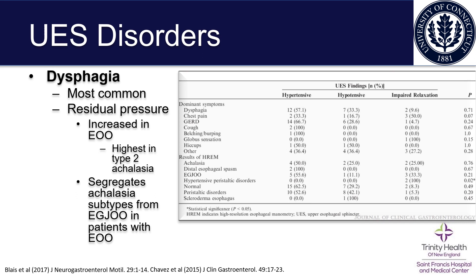When you look at high resolution esophageal manometry results in patients with achalasia, about 50% have upper esophageal sphincter findings that are hypertensive, while the other 50% have either hypotensive or impaired relaxation.